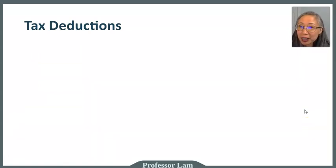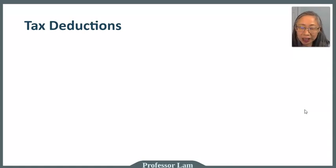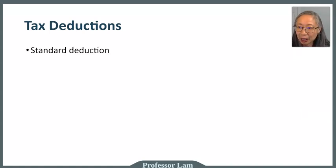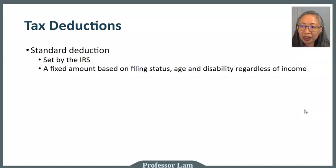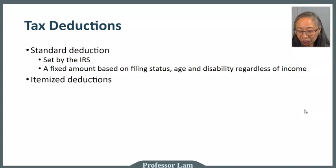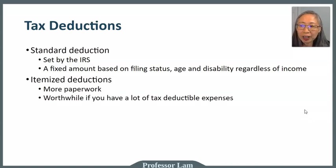To determine how much income you pay tax on, we also look at deductions. The IRS recognizes that you need money to live on, so they don't tax your entire adjusted gross income — they make allowances for living expenses in the form of deductions. Standard deductions are set by the IRS as a fixed amount based on your filing status, disability, and age. You can also itemize your deductions to account for individual expenses, though that requires more paperwork and is worthwhile only if you have many tax-deductible expenses.